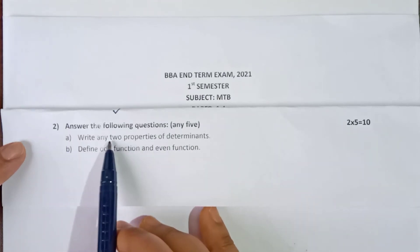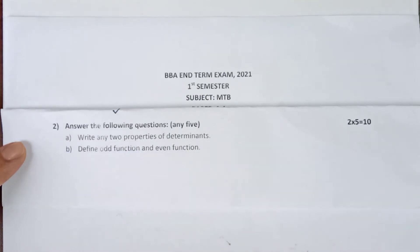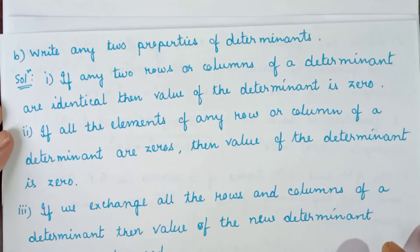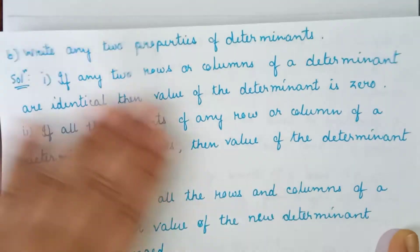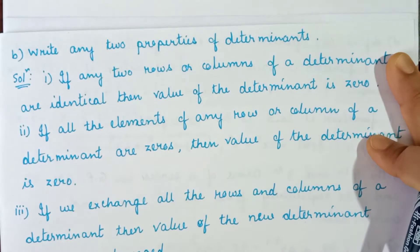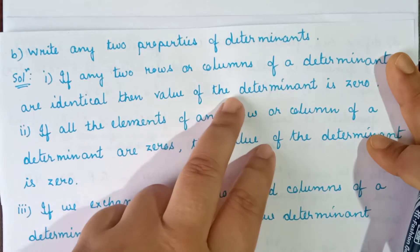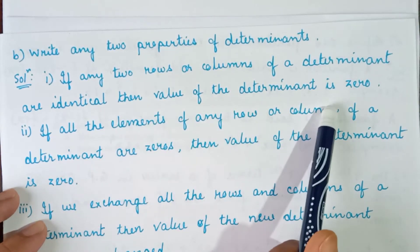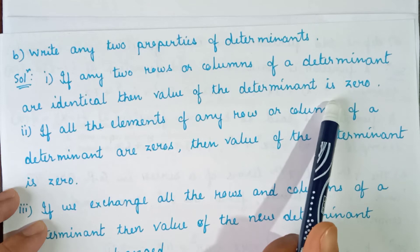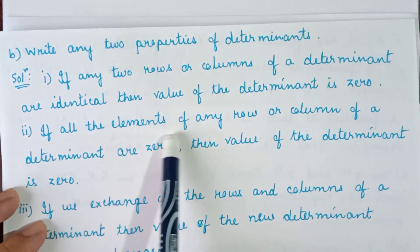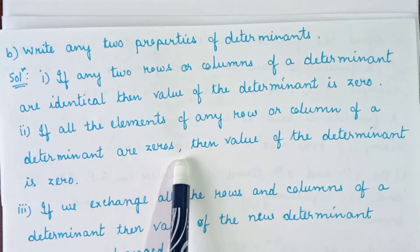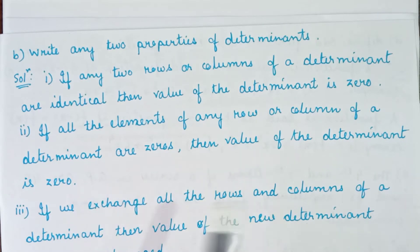Write any two properties of determinants. So let us discuss about some properties. First: if any two rows and columns of a determinant are identical, then the value of the determinant is 0. Second: if any two elements of any two rows and columns of a determinant are 0's, then the value of the determinant is 0.